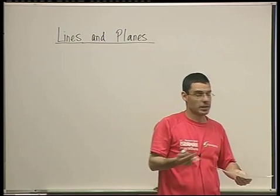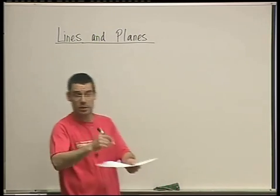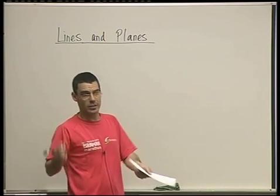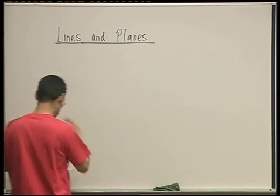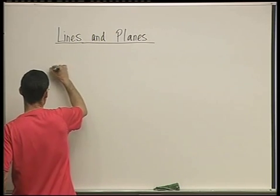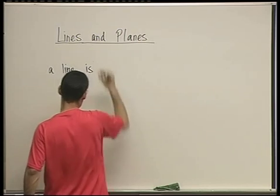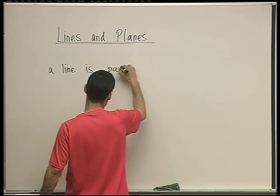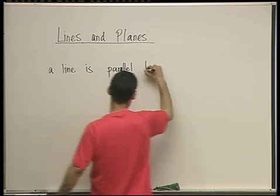We can ask: can we find a point which satisfies both — can we find the intersection point? Those are the kinds of issues we're going to address. A line is parallel to a plane...